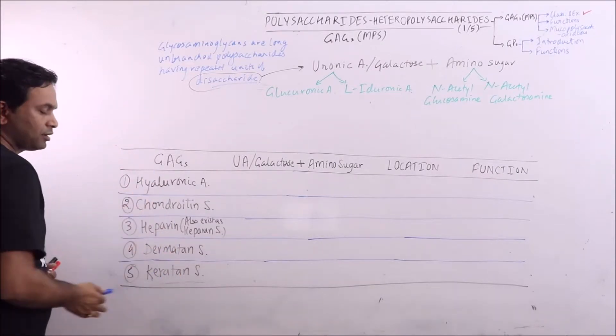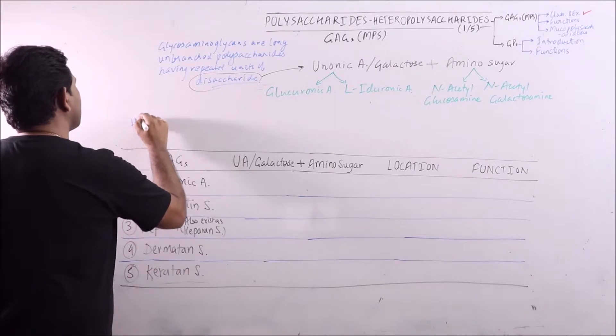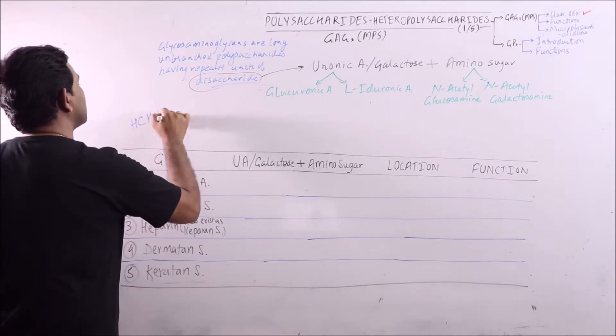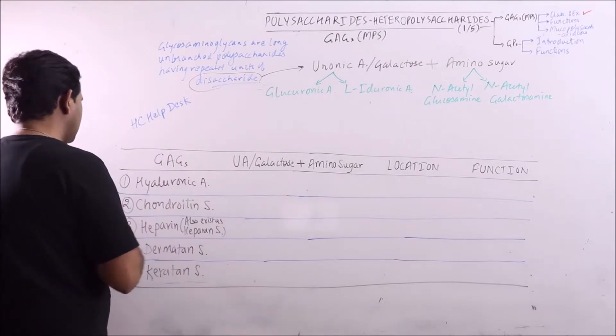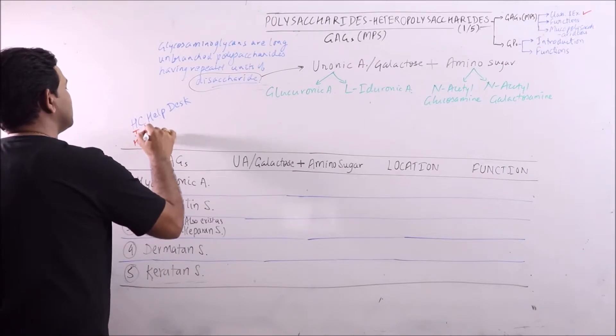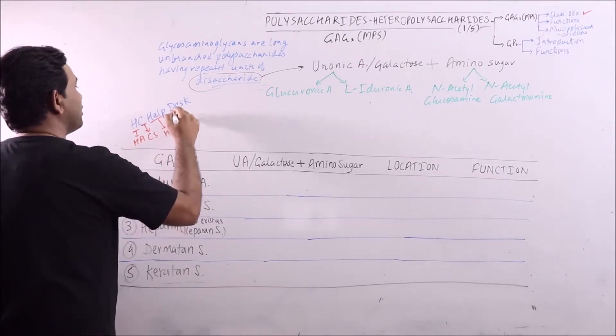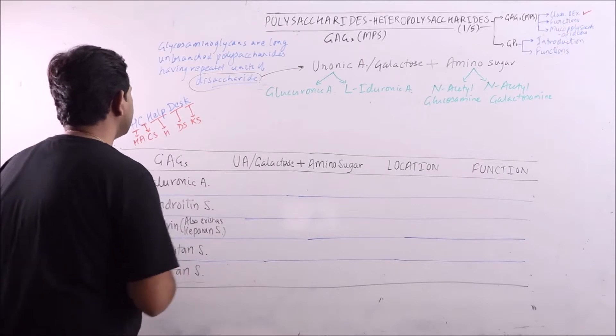We can remember these five in this sequence: hyaluronic acid, chondroitin sulfate, heparin, dermatin sulfate and keratin sulfate.